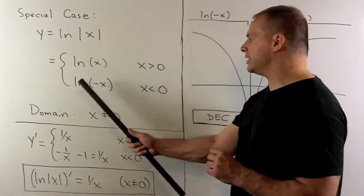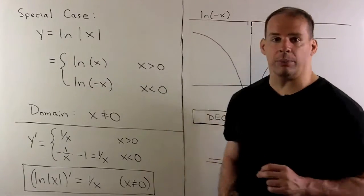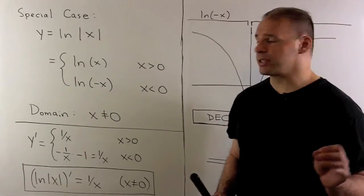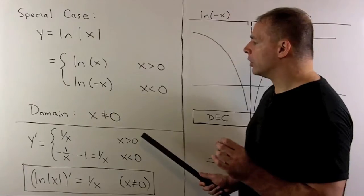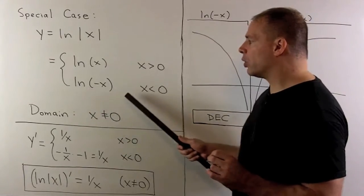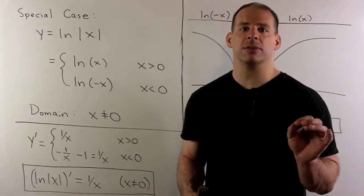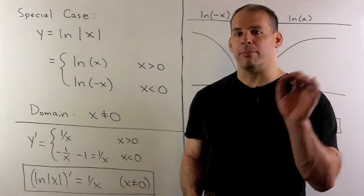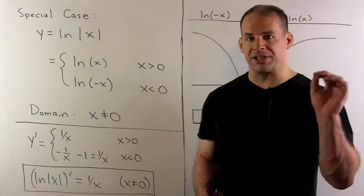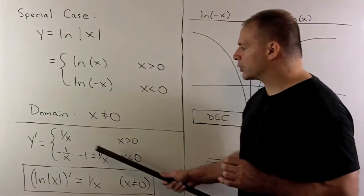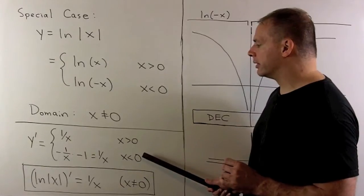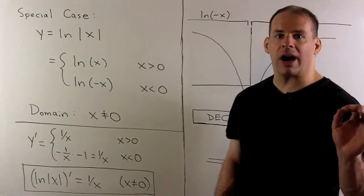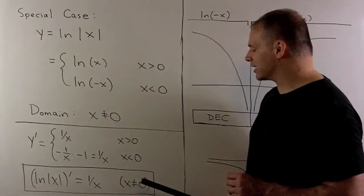To differentiate this piecewise function, we differentiate each piece. For the first piece, the derivative of natural log of x is simply one over x. For the second piece, we use the chain rule on natural log of minus x: box prime over box gives minus one over minus x, which is again one over x. So both pieces give one over x, and the derivative of natural log of the absolute value of x is one over x, with domain x not equal to zero.